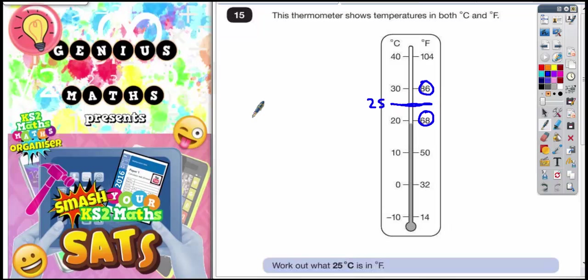So first job is to work out the gap from 86 down to 68. If I work out the difference by doing a subtraction, that will tell me what the gap is between 86 and 68. So 6 take away 8 you can't do, so borrow 1 so the 8 becomes 7.